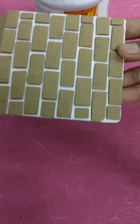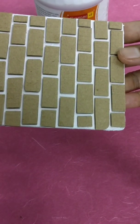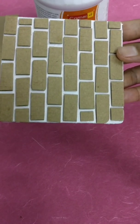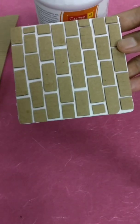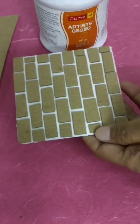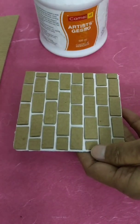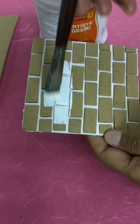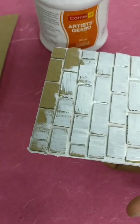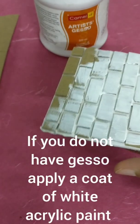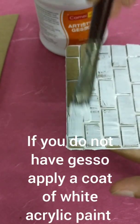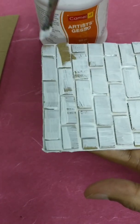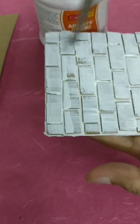So the base is now ready, the cardboard pieces are stuck and now I am going to apply a coat of gesso over this. Once you finish applying the gesso, we will leave it to dry for a while and then paint the bricks.